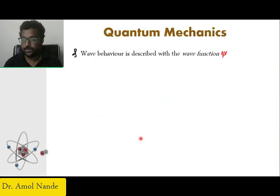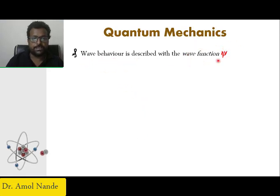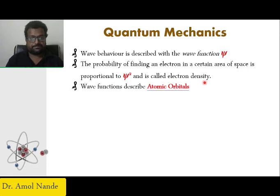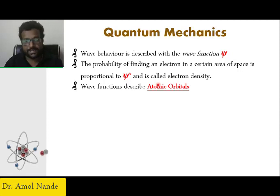In quantum mechanics everything is about wave function. We generally define wave function by psi (ψ). The probability of finding the electron is not the wave function itself — it is actually proportional to the square of the wave function, which we call electron density. Wave function successfully describes atomic orbitals — spherical shape, dumbbell shape, whatever shape — showing where the probability of finding an electron is maximum or minimum. All these things are easily explained using ψ and ψ², that is, wave function and electron density function.